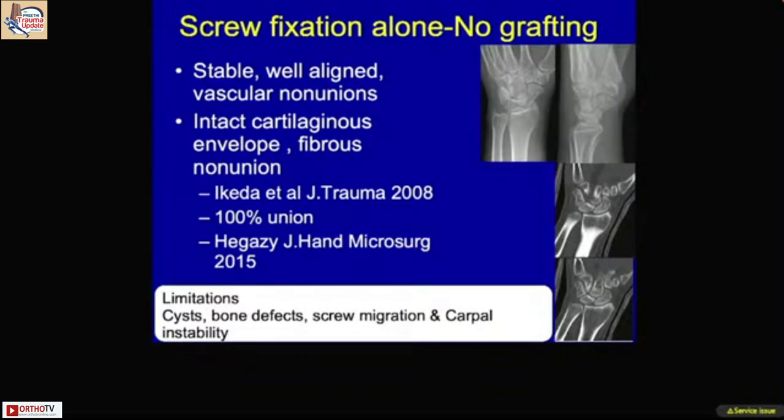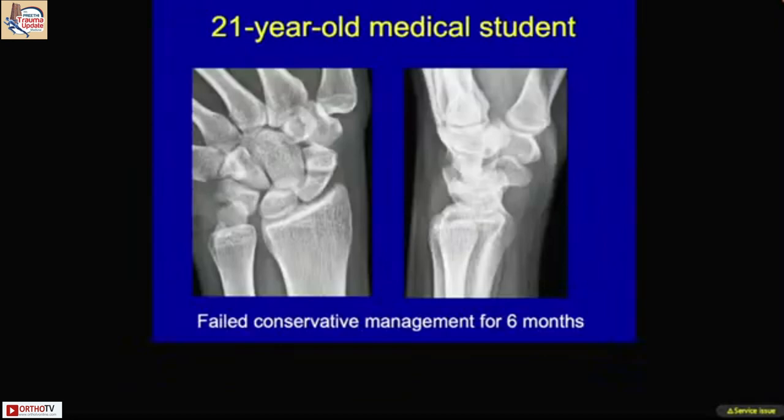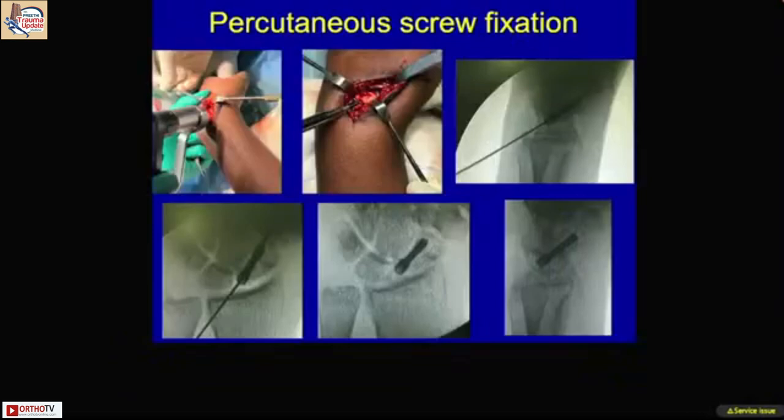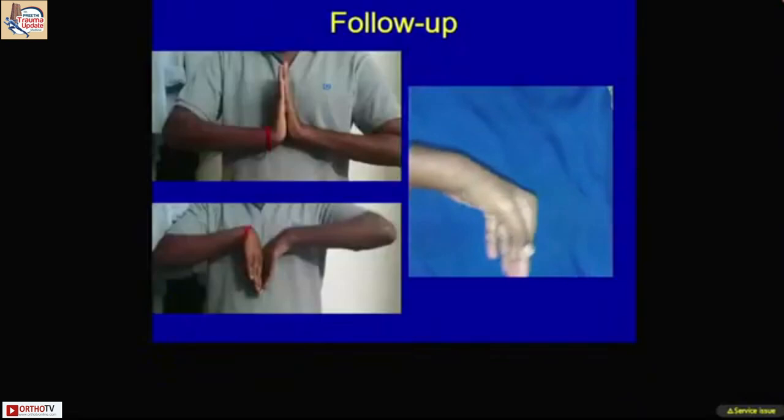There is evidence that a screw alone can provide good fixation and achieve union. From a series by Ikeda and Hegesi, stable scaphoid non-union treated with screw fixation healed well. Similarly, we had a medical student who came with failed conservative management of six months; we performed percutaneous fixation and this fracture healed well at six months, as seen in the follow-up.